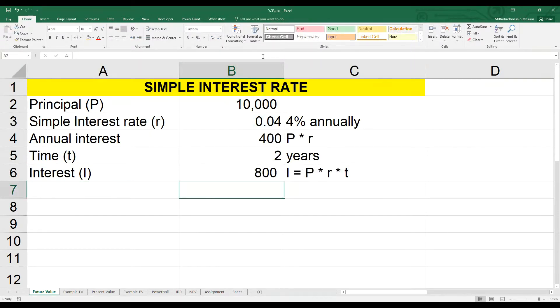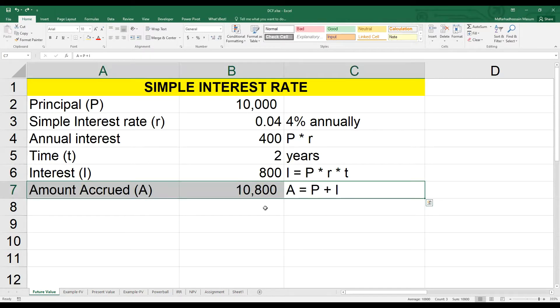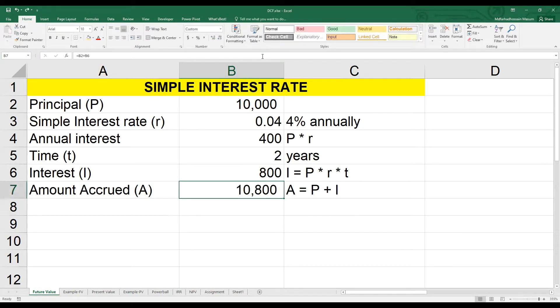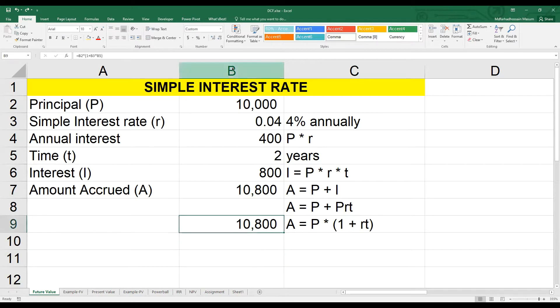Therefore, the total amount I will receive at the end, which is called future value or amount accrued and expressed by capital A, is simply my principal and interest put together. I know that interest is P, R, T. So I can rewrite the amount accrued as A is equal to P multiplied by 1 plus R, T.